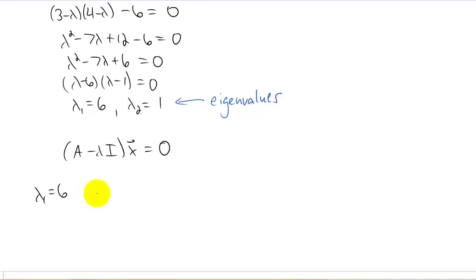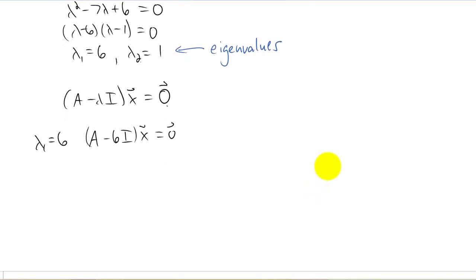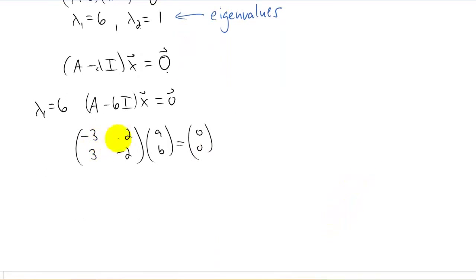So let's start with lambda equals six. And my apologies, this should be the zero vector right here, not just zero. Okay, so we're plugging in lambda equals six. And if we find A minus 6I, we get this piece right here. And as we discussed in class, both of these rows should be the same in a two by two system. So we've just confirmed that we're doing this correctly.